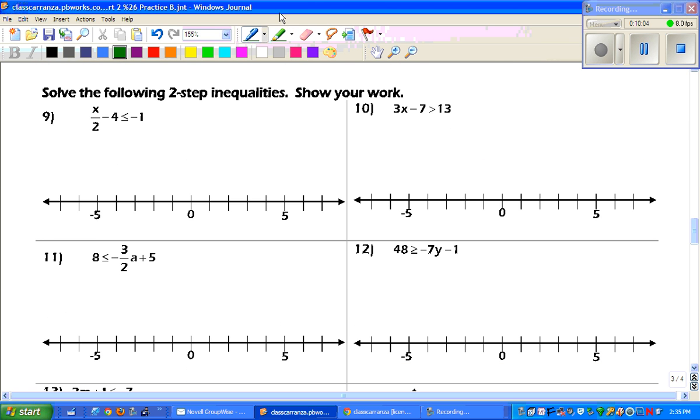Solve the following two-step inequality. Show your work. And remember now that we are following the rules of SADMEP. So, we need to cancel addition or subtraction first. Add 4 to both sides. Get x over 2 less than or equal to 3. To get the x by itself, you multiply both sides by 2. And you get x is less than or equal to 6. So, we have a closed circle. And then you are shading everything to the left. And you can shade that any way you want to.